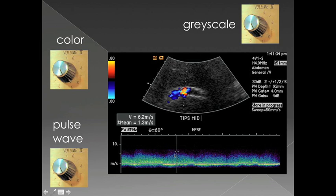In pulse wave Doppler, if the gain is set too low you won't be able to see the pulse wave. If the gain is set too high, you'll have a lot of noise in your background.